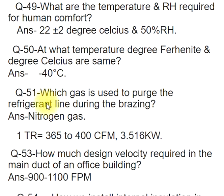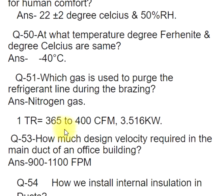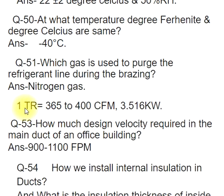Q51: Which gas is used to purge the refrigerant line during brazing? ANS: Nitrogen gas. 1 TR equals 365 to 400 CFM, 3.516 kilowatts.